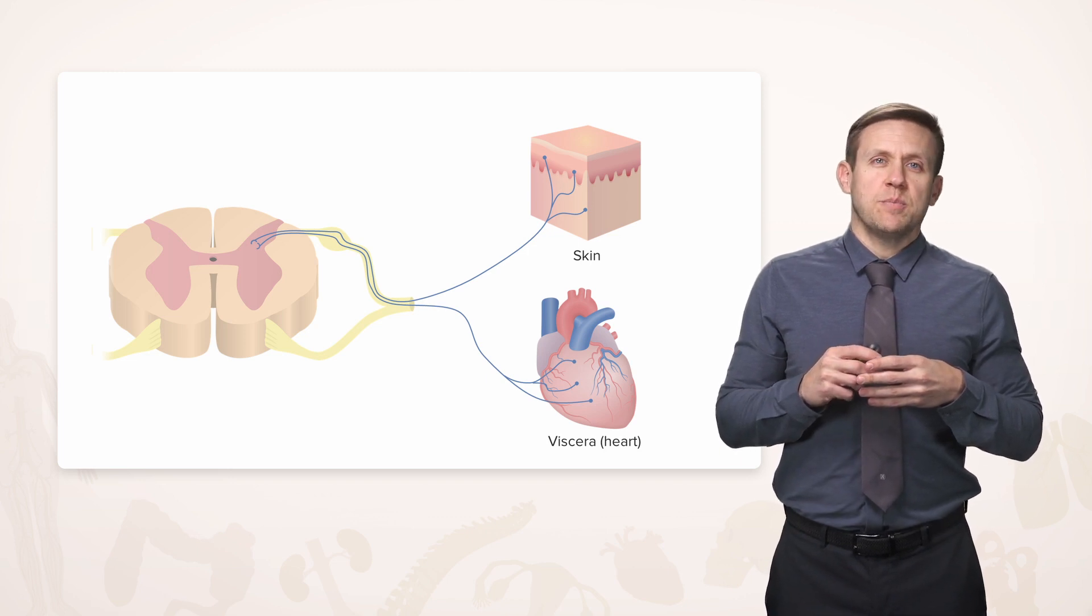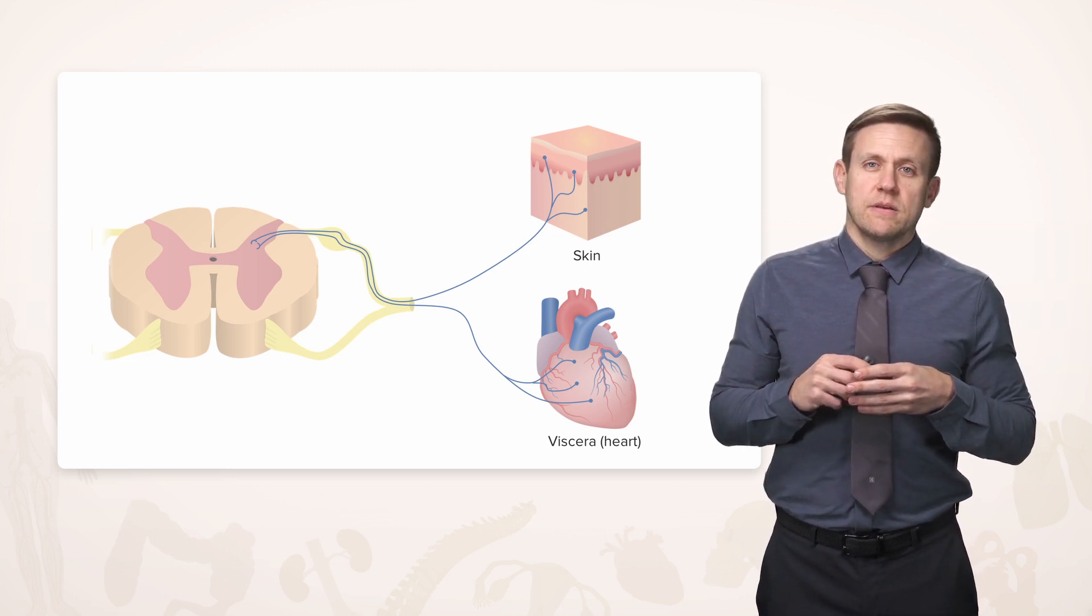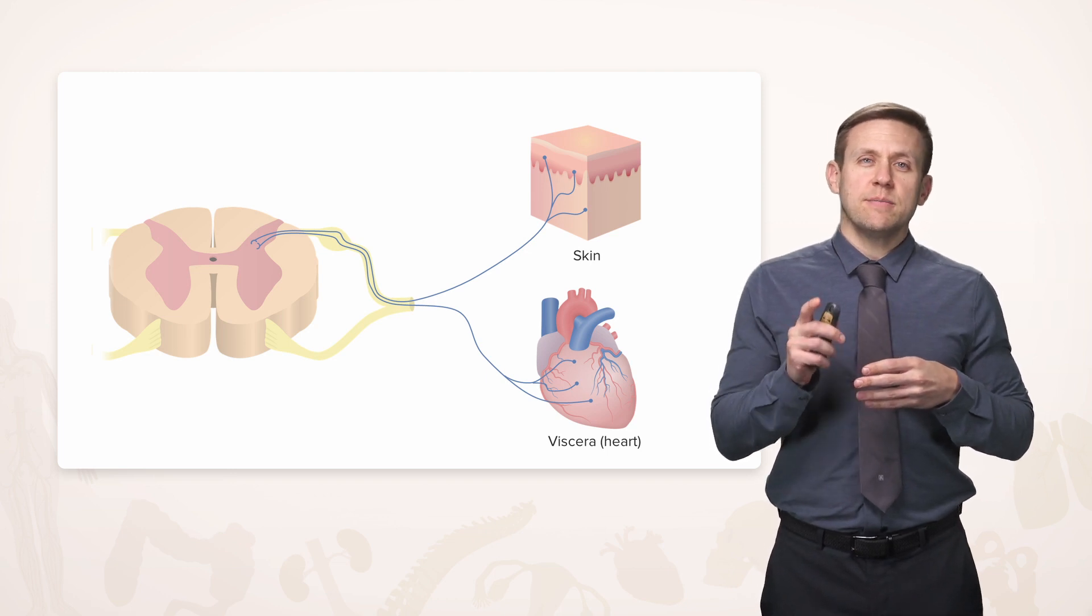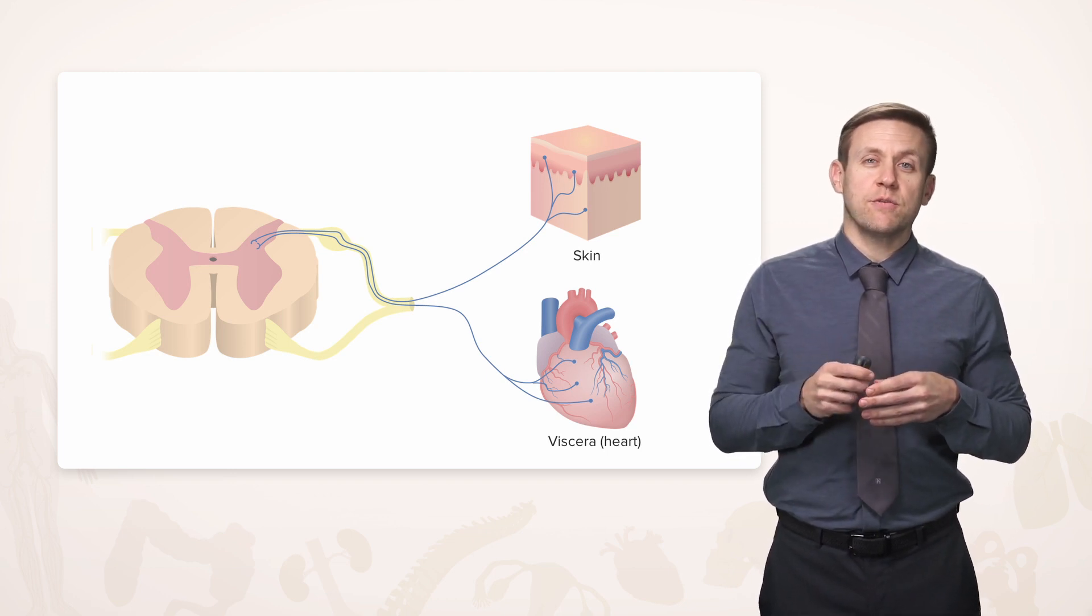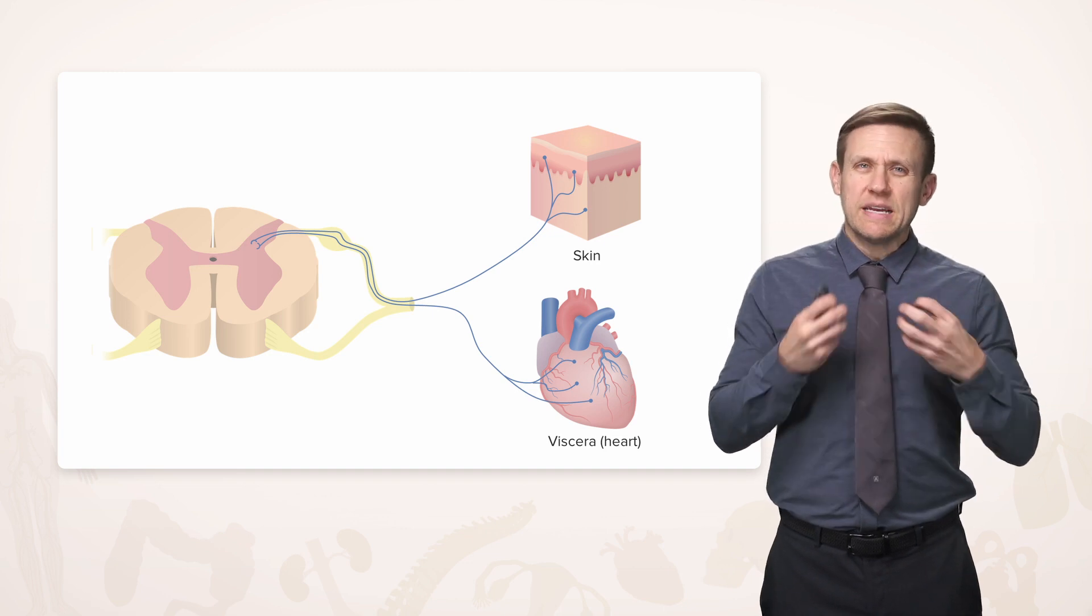And if there is, for example, a heart attack, that sensory information from the heart coming into the same level as the sensory information of skin from the shoulder might get confused. And you might get what's called referred pain, whereas the pain may be sensed as coming from the skin of the shoulder when it's really coming from the heart.